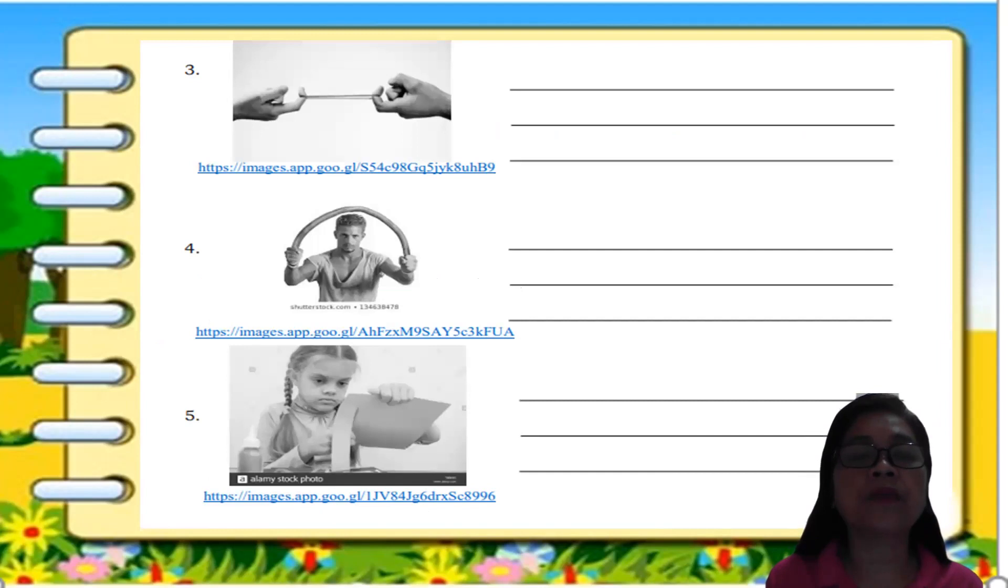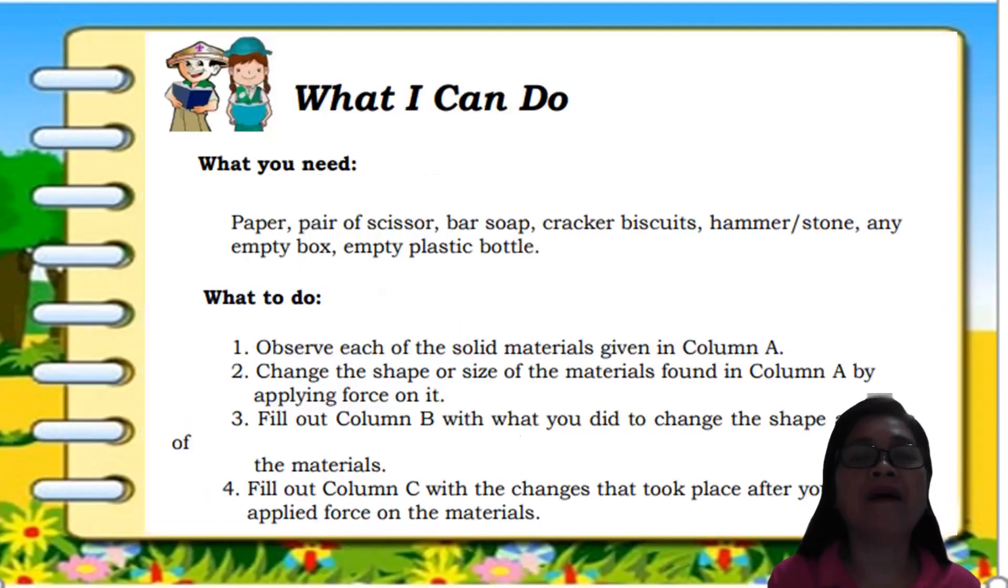Number four, a man is holding an object. What he did to the object? What happens to the shape and size of the object? For number five, what the little girl is doing to the piece of paper? What happens to the shape and size of the paper she is holding? You're right. Write the answer on the blank.